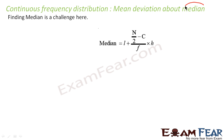Finding the median here is a big challenge. Earlier, with normal distribution, finding the mean was also difficult. There we arranged all the values in ascending order, found the number of terms, and based on that determined in which interval the values lie — the xi value — and got the median. Here also, finding median is a difficult task.